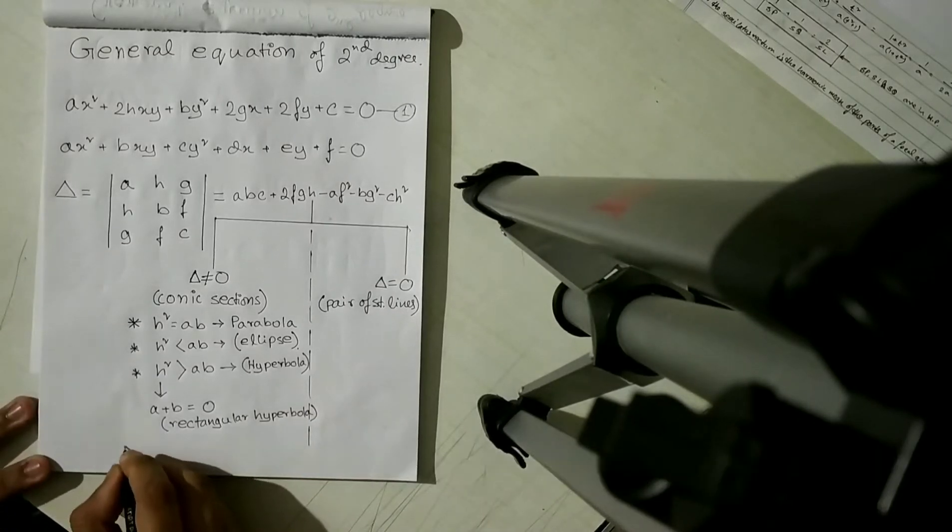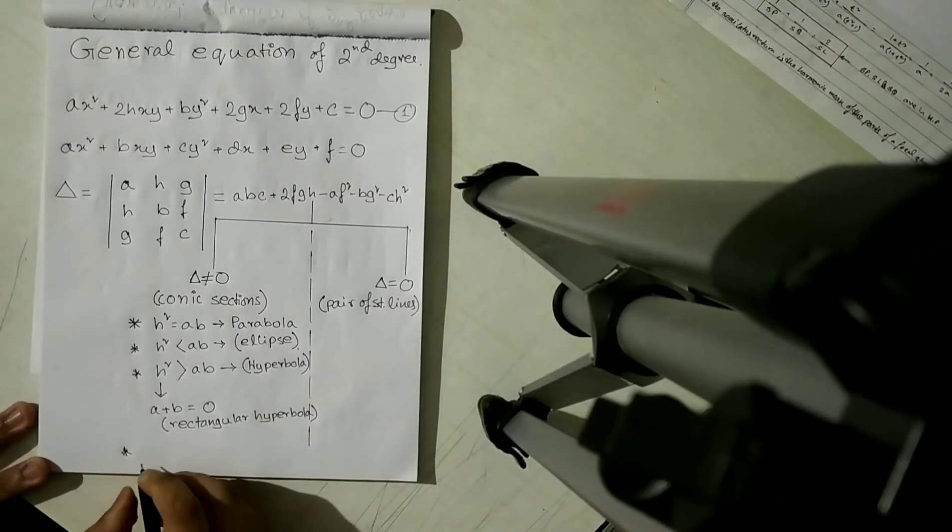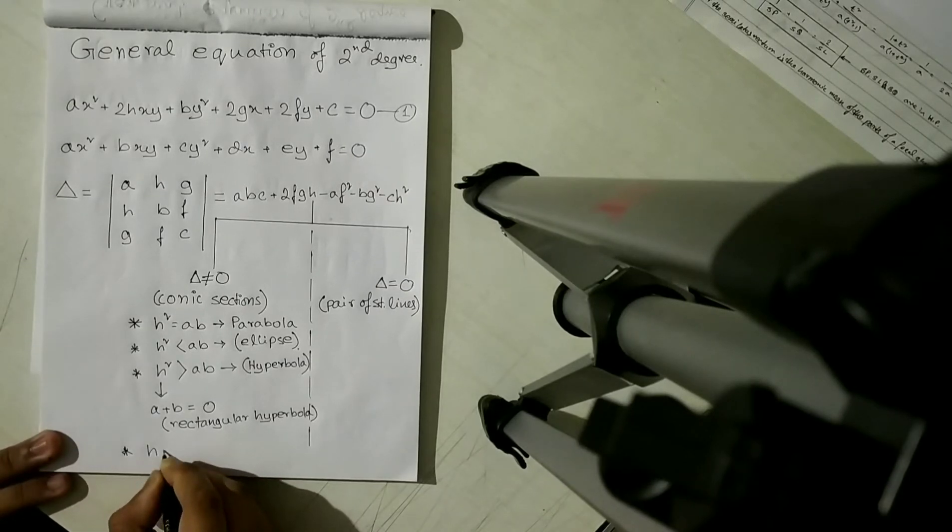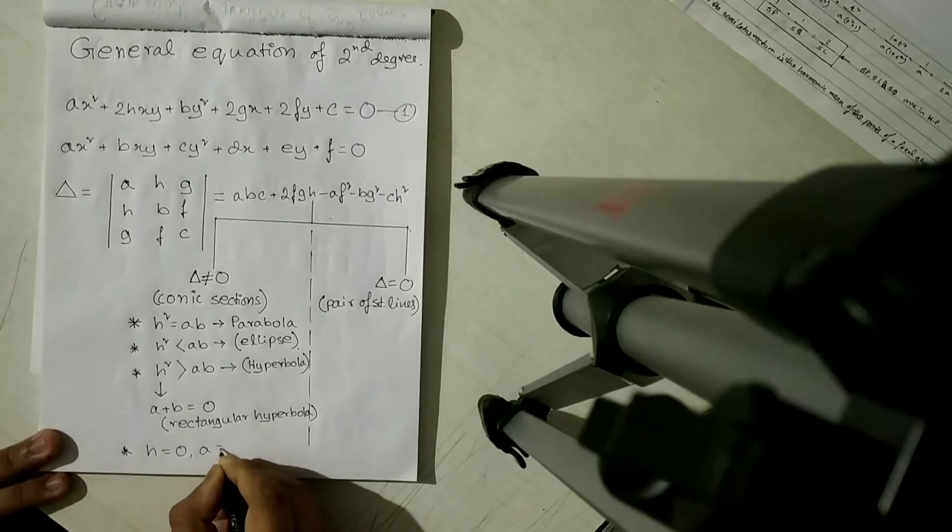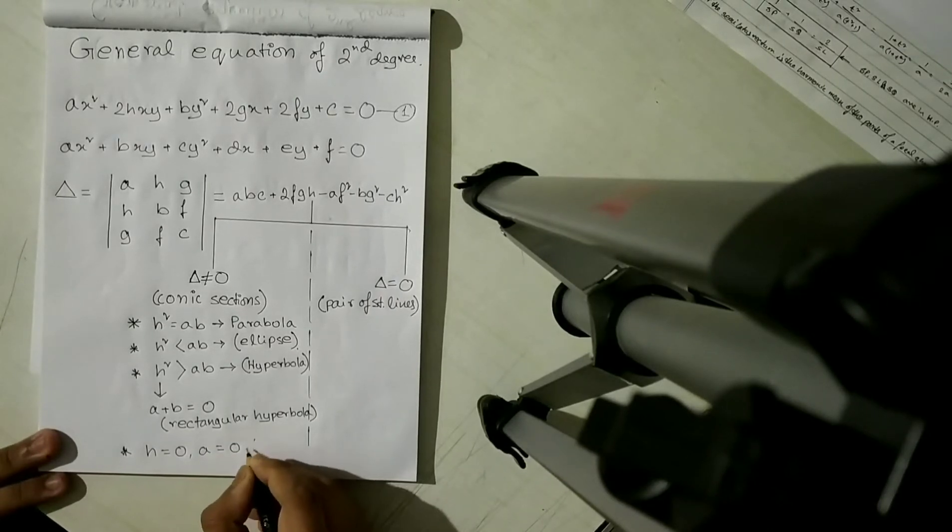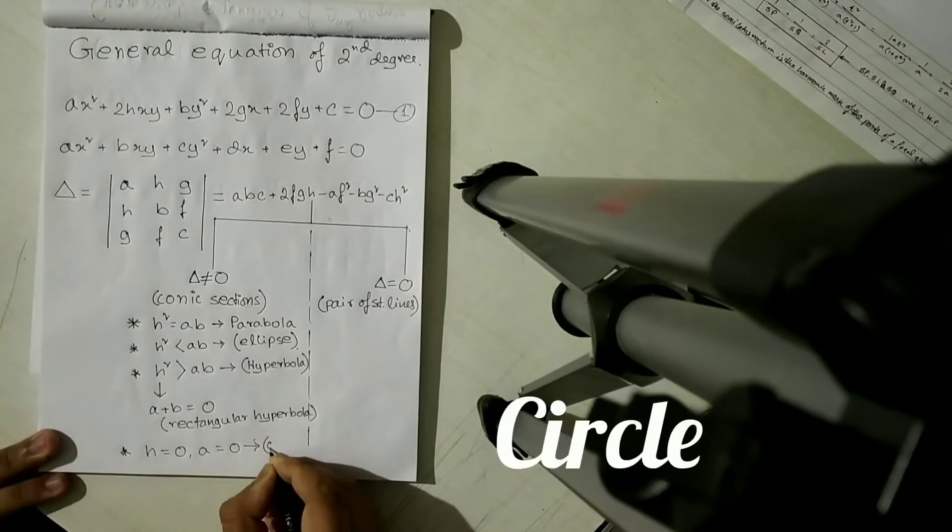And the last case: if h is equal to 0 and a is equal to b, the equation symbolizes a circle.